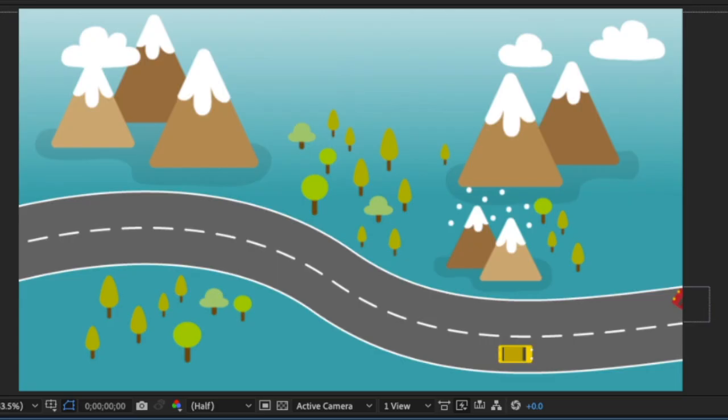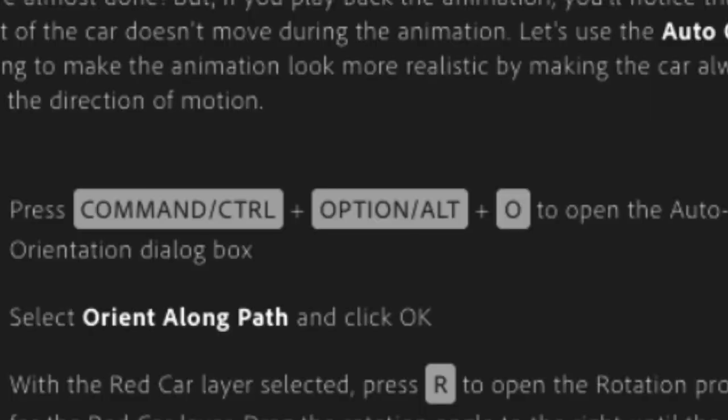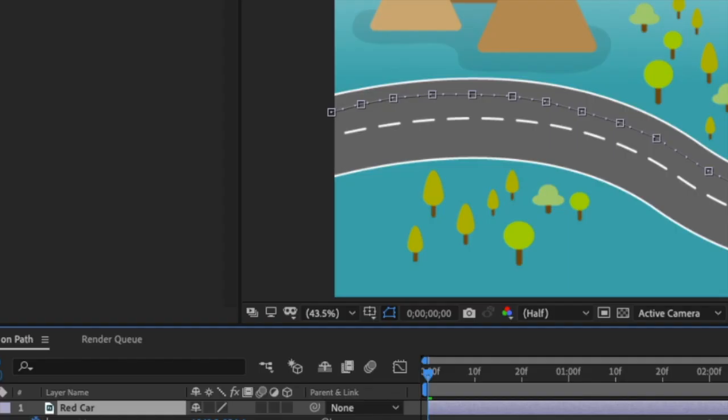Apparently that's not happening anymore. Press CTRL O to open the menu. Apparently not. With the red car layer selected, press R to open the rotation property for the red car layer.